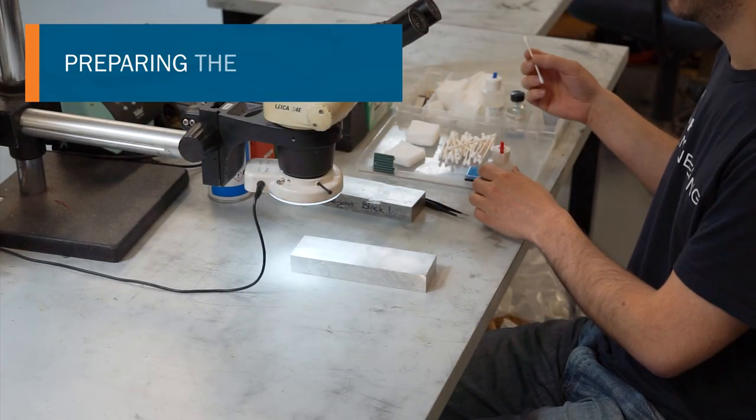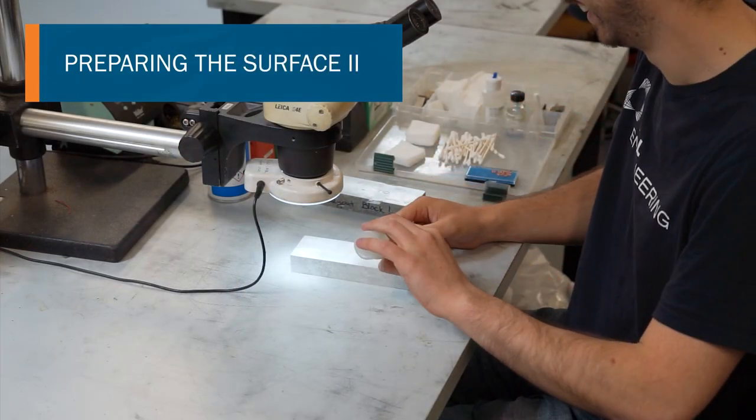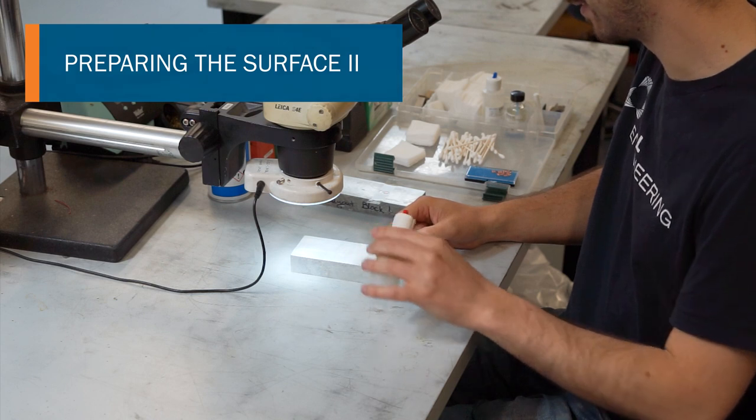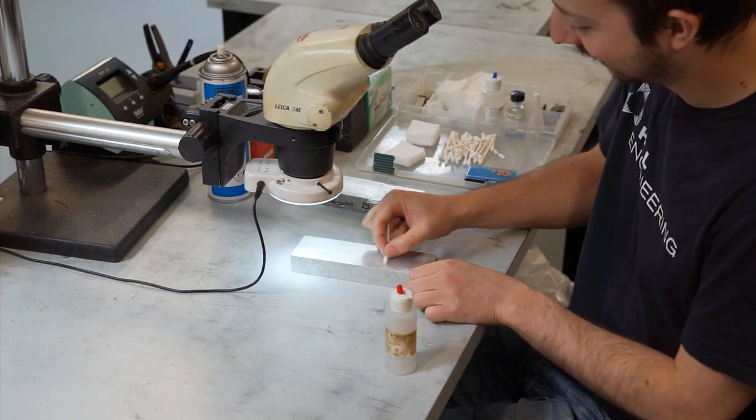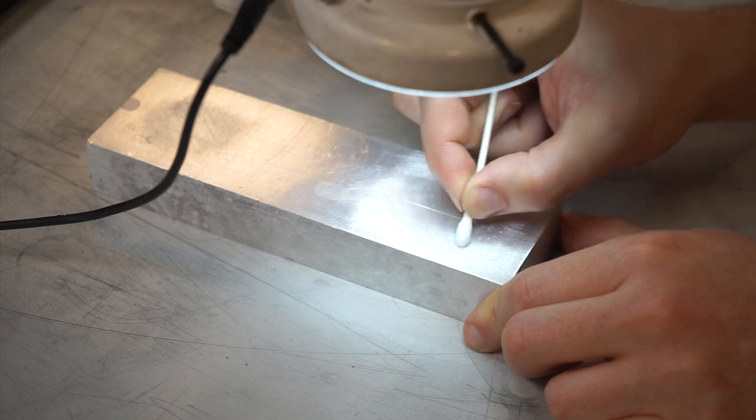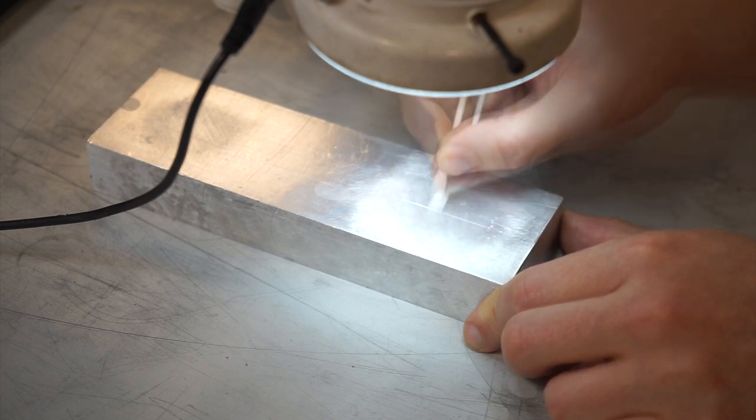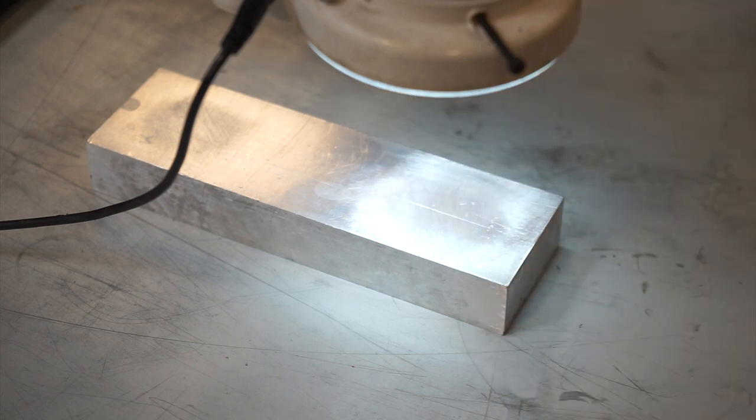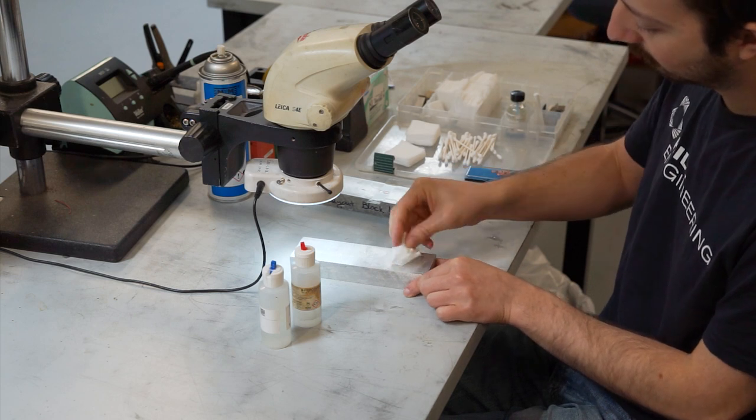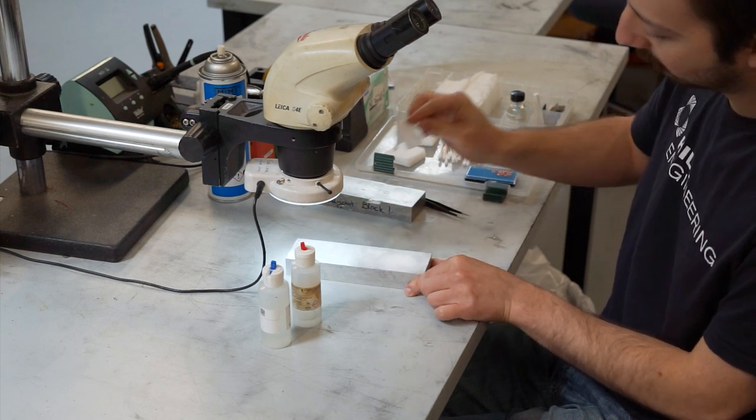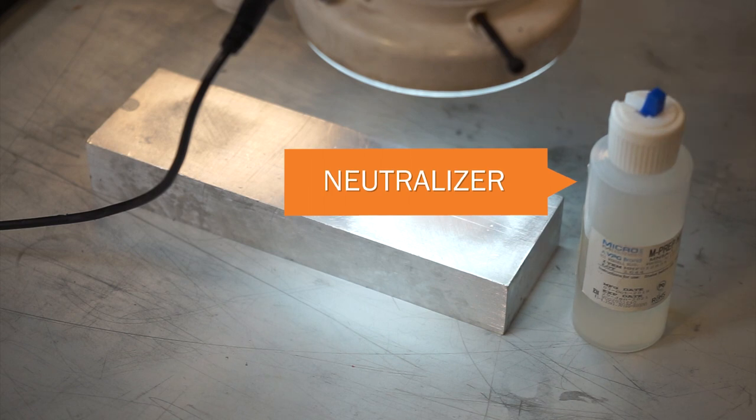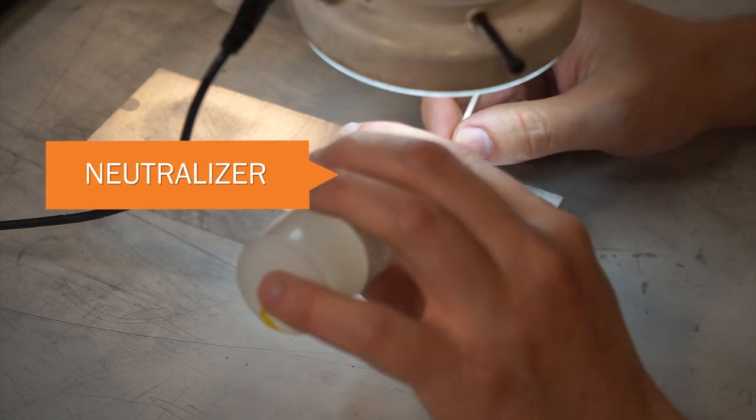The final task before the strain gauge can be applied is a secondary surface cleaning. Scrub the surface with the mild acid conditioner repeatedly using cotton swabs until one remains clean. Wipe the area dry with a single stroke of a paper towel, one direction at a time. Apply neutralizer once on the area using the same technique.